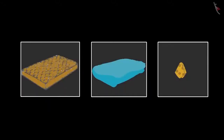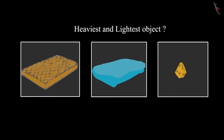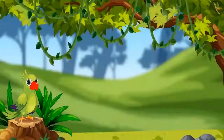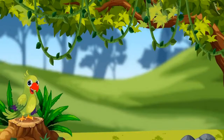Some objects are kept here: a handkerchief, a bedsheet, and a mattress. Children, can you tell me which of these three is the heaviest and which is the lightest? Yes — the mattress is the heaviest and the handkerchief is the lightest. Was your answer the same, children? It seems you have learned to recognize the lightest and heaviest objects.